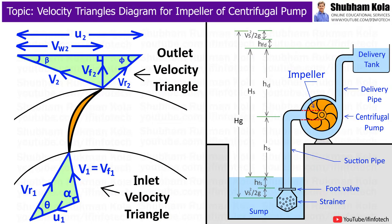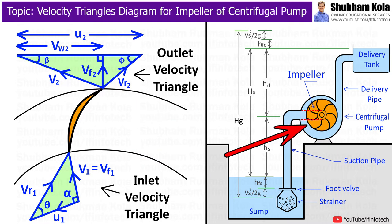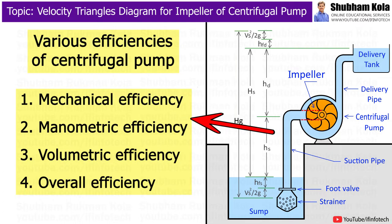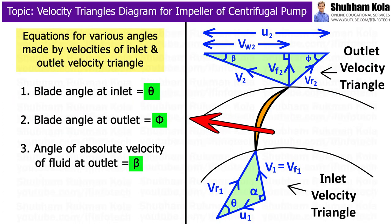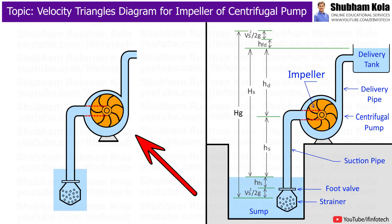In this video, we will discuss the velocity triangles diagram for the impeller of a centrifugal pump. We will also see the formulae of work done, efficiencies, and various angles of inlet and outlet velocity triangles. First of all, we will see the construction and working of the centrifugal pump.